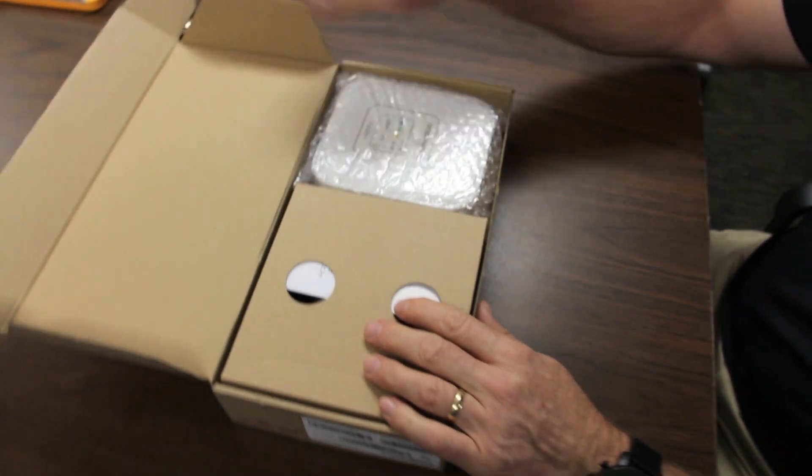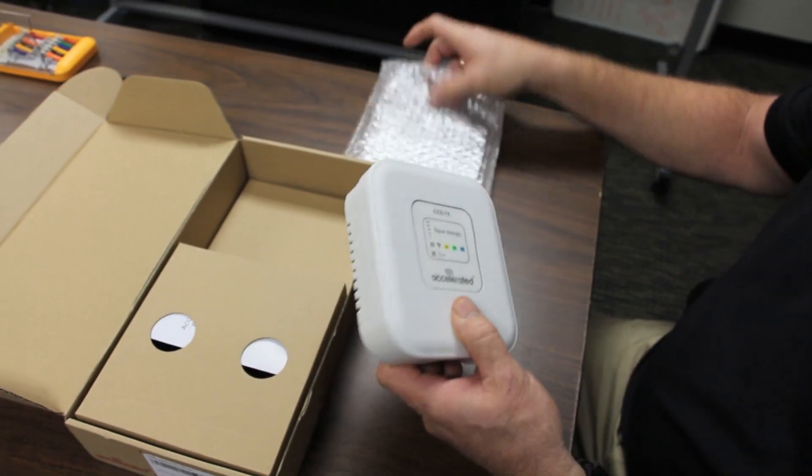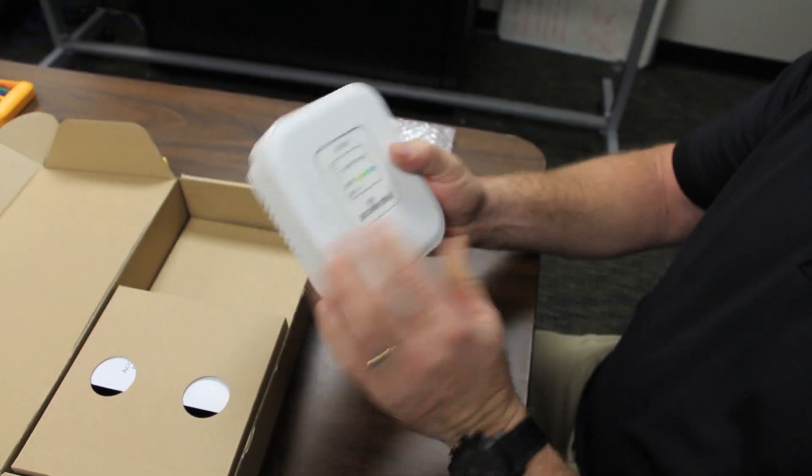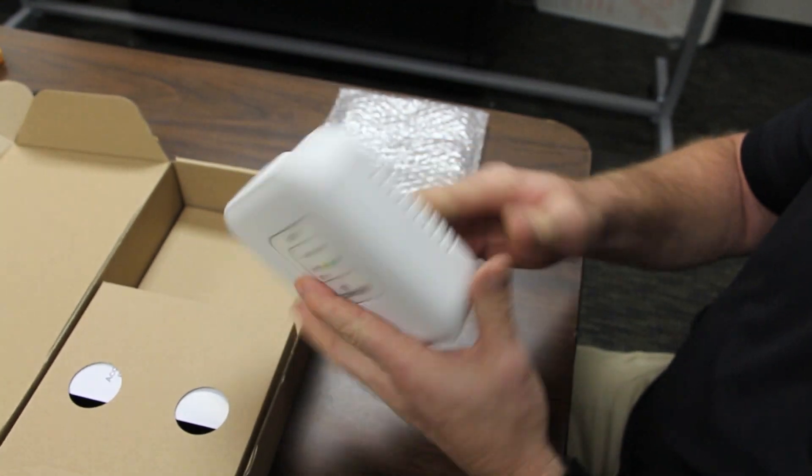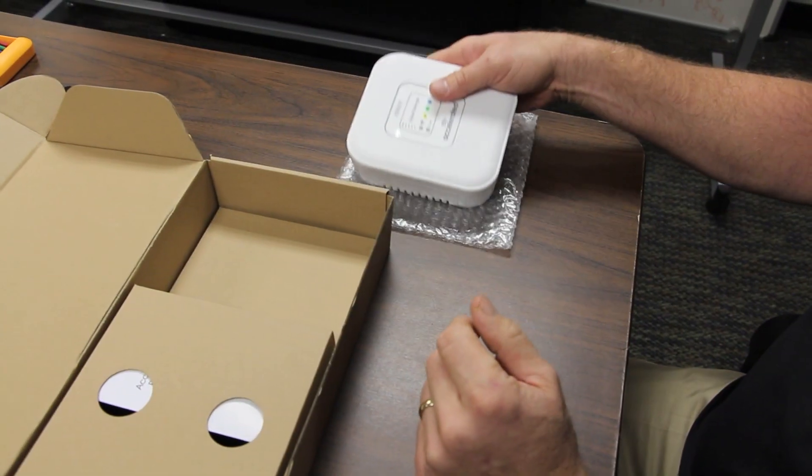Let's open the unit up. First thing we see is the unit itself. Pretty straightforward signal strength meter here on the front and a little compartment. I'll show you details of that.